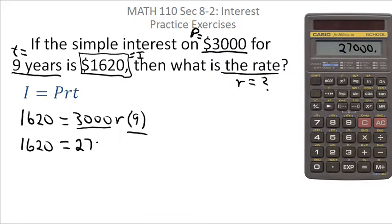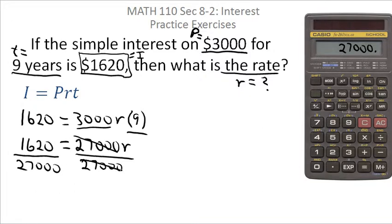So you'd have 27,000 times r. Since we're solving for r, we'll want to divide both sides by 27,000. The 27,000s will divide out, and you'll end up with r is equal to 1,620 divided by 27,000.